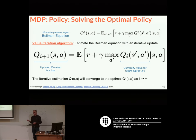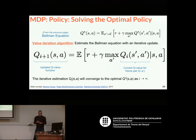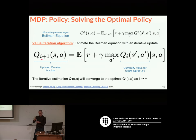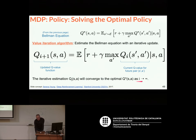The problem is how to estimate this Q function — given a state and action, tell me what's the best reward I can get. That's very complicated. One way to do it is something called the value iteration algorithm, which basically estimates this Q function in an iterative way. If we are able to iteratively estimate this Q function and we iterate until infinity, this estimation will match the actual optimal Q value.